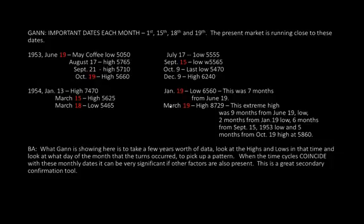What GAN is showing here is to take a few years' worth of data, look at good highs and lows in that time, and look at what day of the month those turns occurred to pick up a pattern. When the time cycles coincide with these monthly dates, it can be very significant if other factors are also present. This is a great secondary confirmation tool — and again, that's secondary.